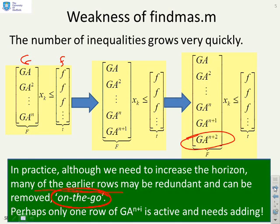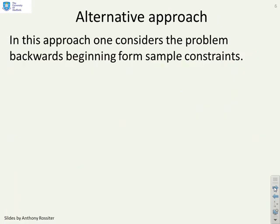It helps our life if we remove redundant rows on the go. We don't wait to the end; we say I already know lots of these rows are redundant, let's get rid of them before I carry on. The other thing we can do is look at adding just one row of GA^(n+i) at a time, rather than adding them as blocks.